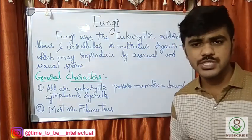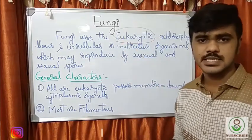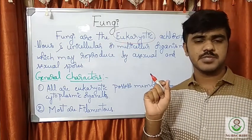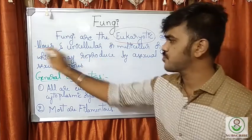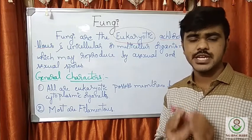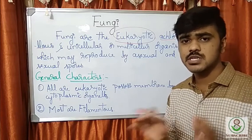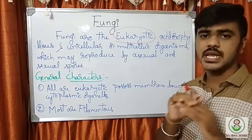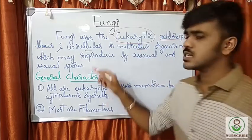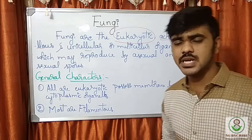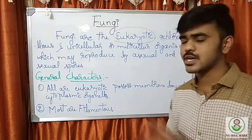First, let's see the definition of fungi. It's very simple. Fungi are eukaryotic — they have a double membrane nucleus. They are achlorophyllous, meaning there is no chlorophyll. They depend on other organisms or chemical reactions for food; chemicals are the sources of food for these organisms. They're unicellular or multicellular and may reproduce either by asexual or sexual methods. Spores are very important in fungi.